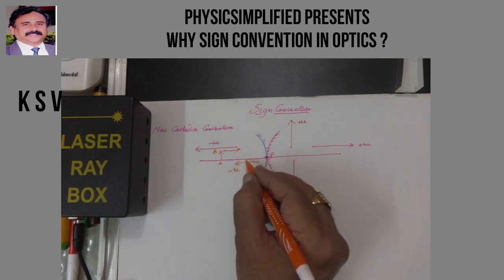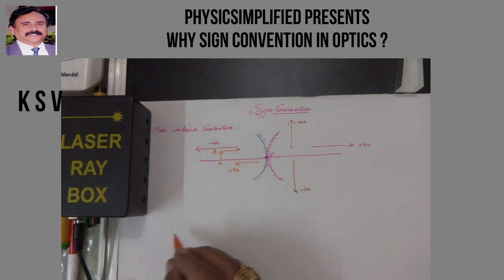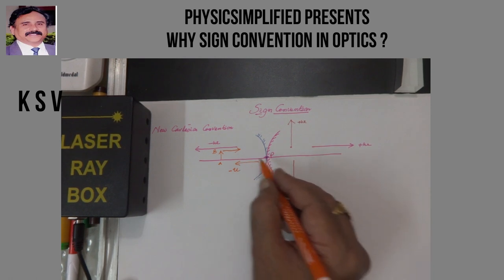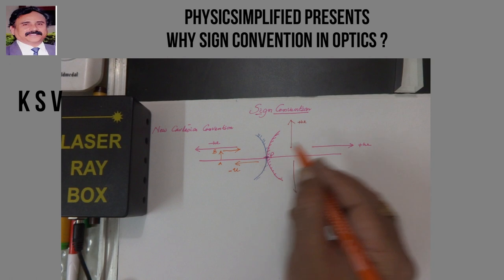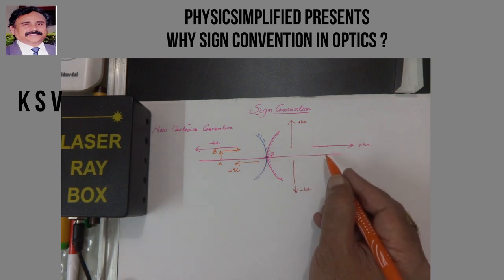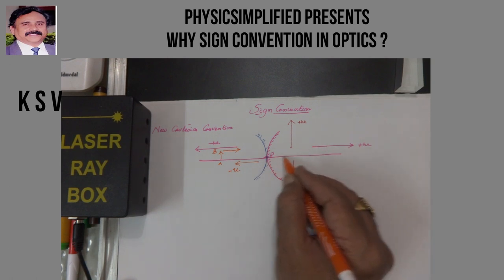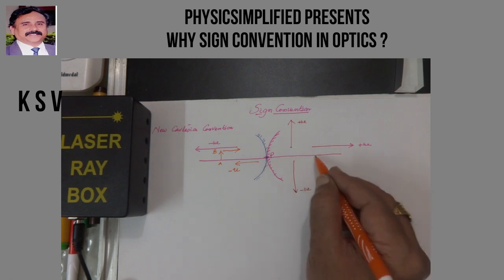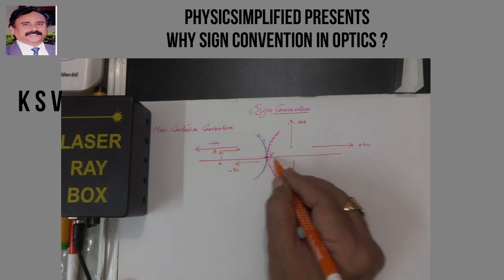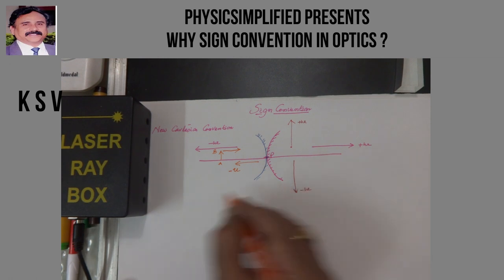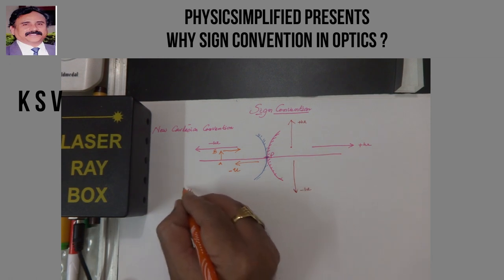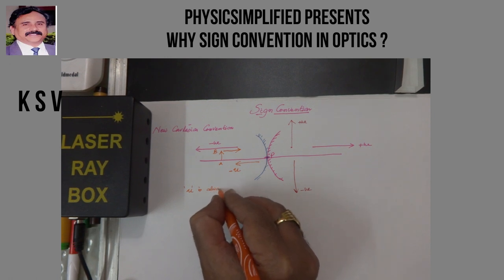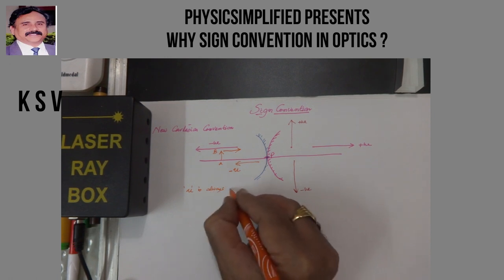If the image is formed on the same side as the object, then V is also negative. If the image is formed behind the mirror, then I have to measure in the direction of light, so it should be considered as positive. U is always negative in any case.